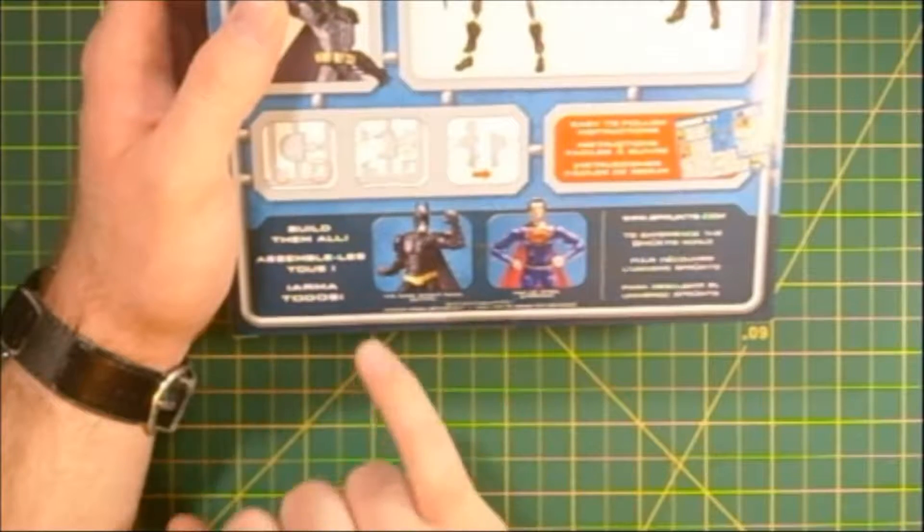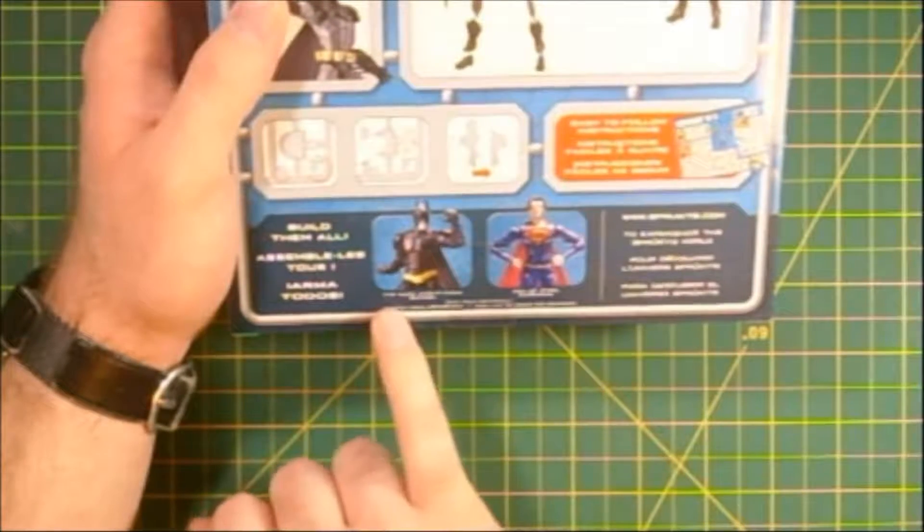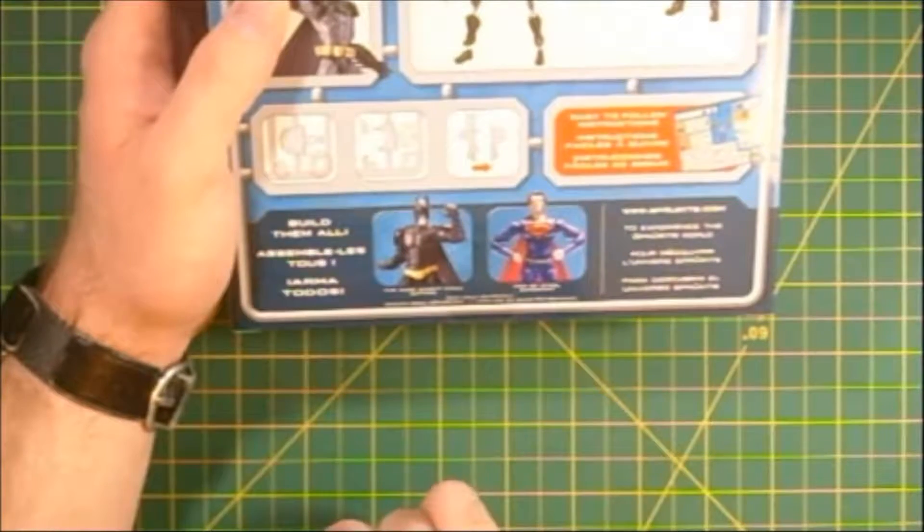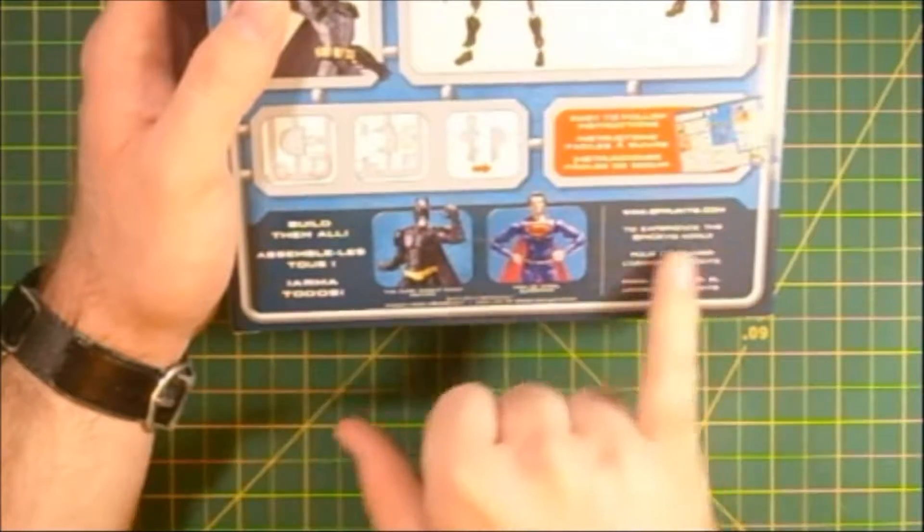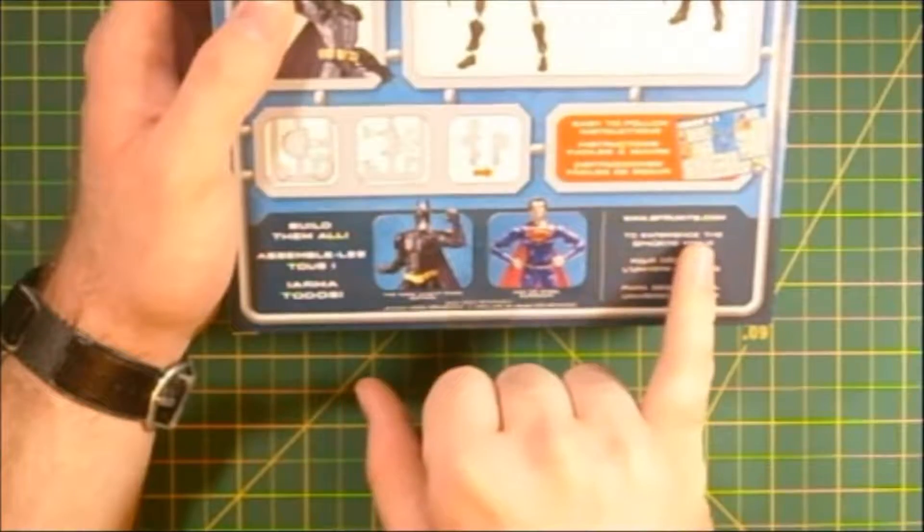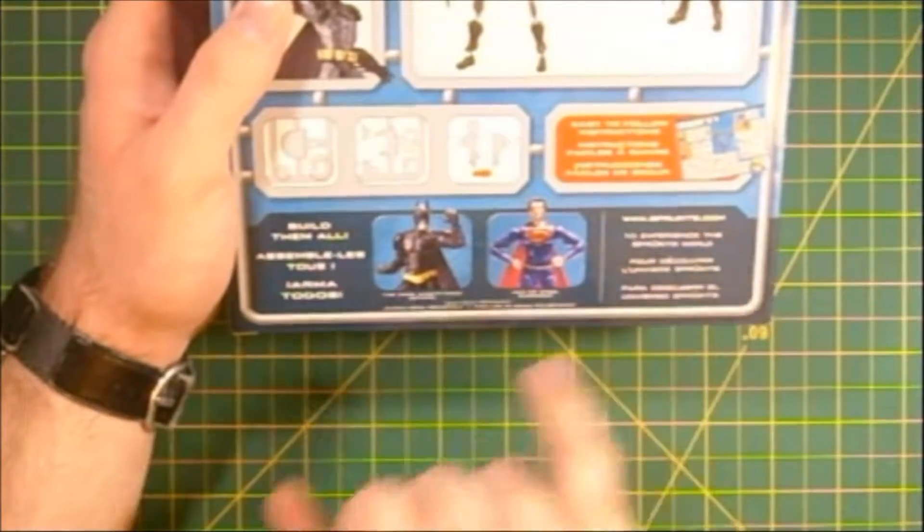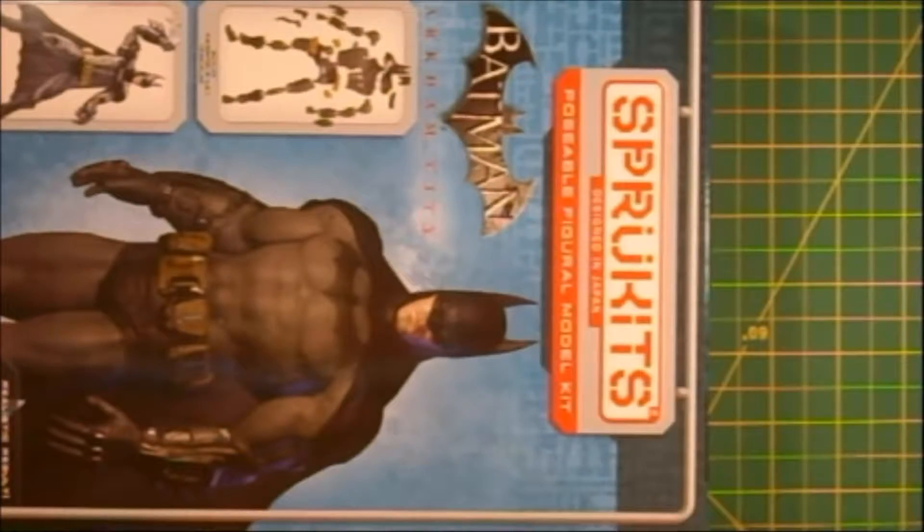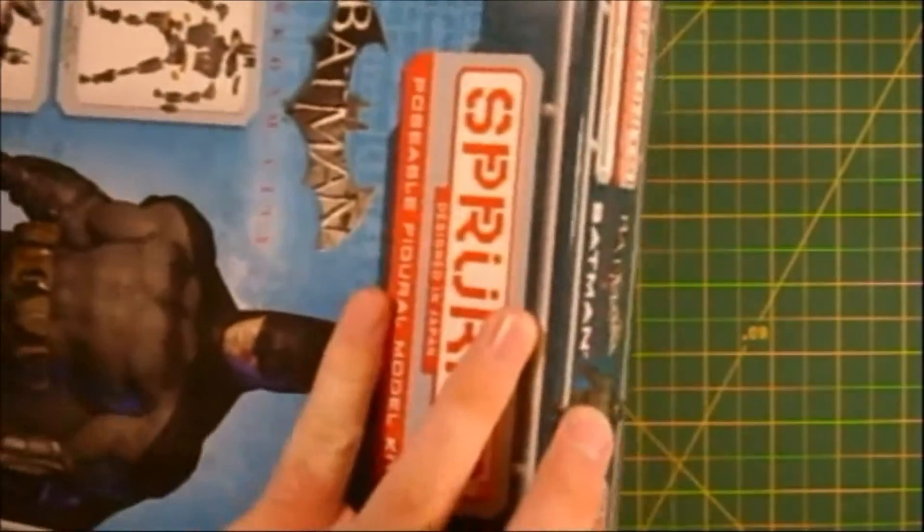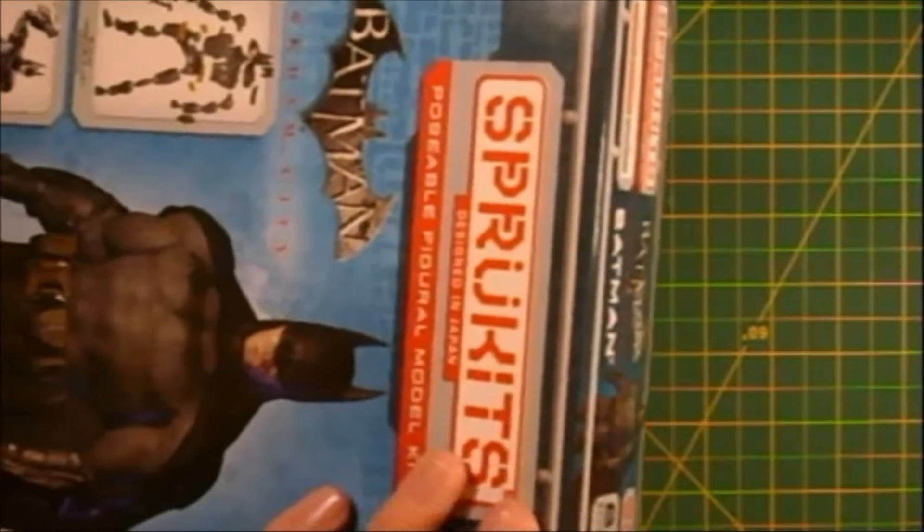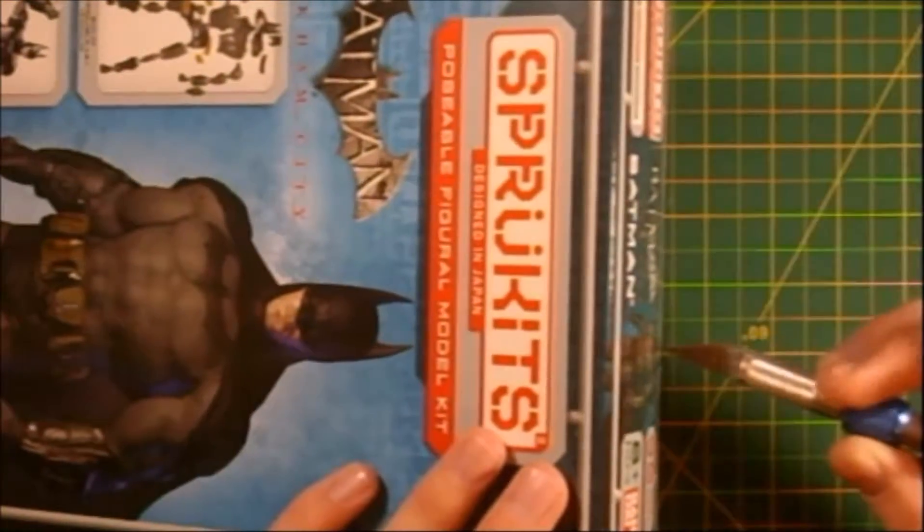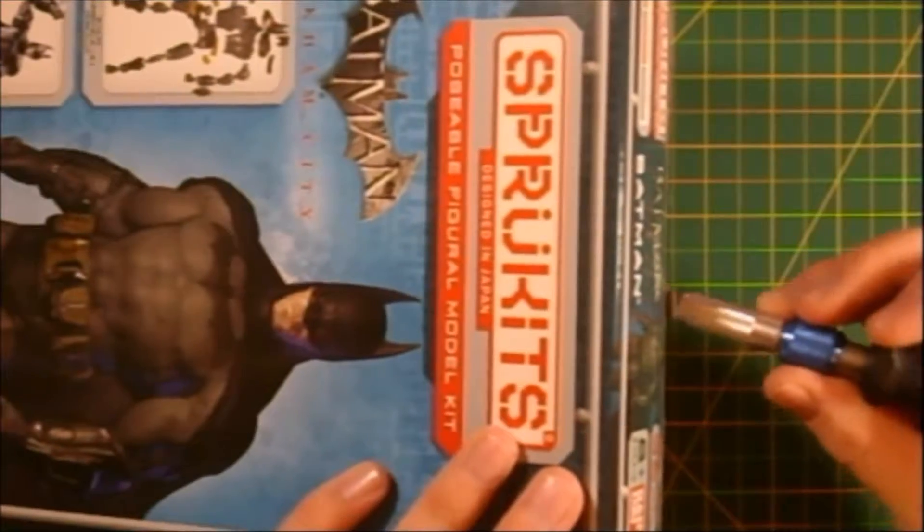Little advert for the Dark Knight Rises version of Batman and the Man of Steel version of Superman, along with a little plug for the Sprue Kits website. Again, just because of the difference in the markets, the Sprue Kits Box is quite different from a traditional Bondi model kit box.